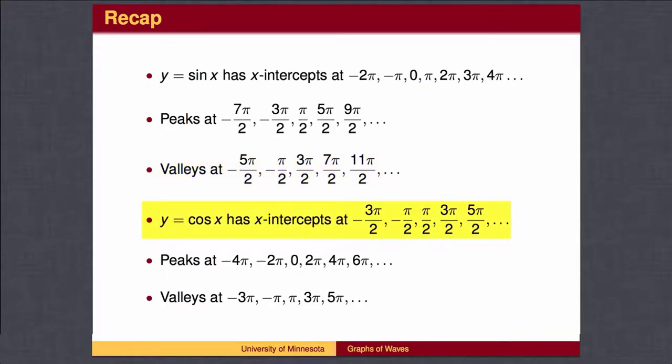y = cos(x) crosses the x-axis at the odd multiples of π/2, starts at the top of a wave at 0 and again every 2π after that, and reaches the bottom of a wave at π and again every 2π after that.